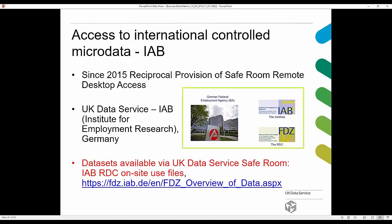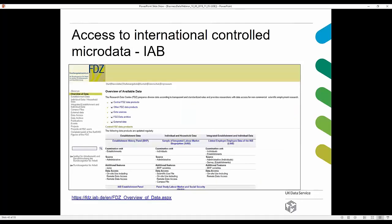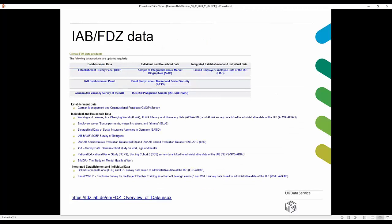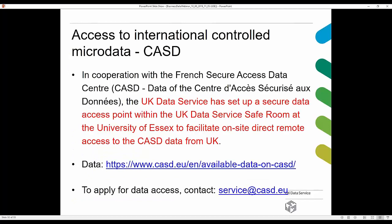For information regarding IAB datasets available via our safe room, please follow the link provided. Data access information can be found at the IAB data access pages. A screenshot shows the overview of available IAB data products, including for example LIAP — the Linked Employer-Employee Data of the IAB.